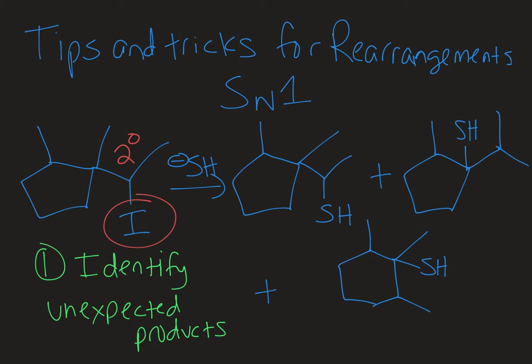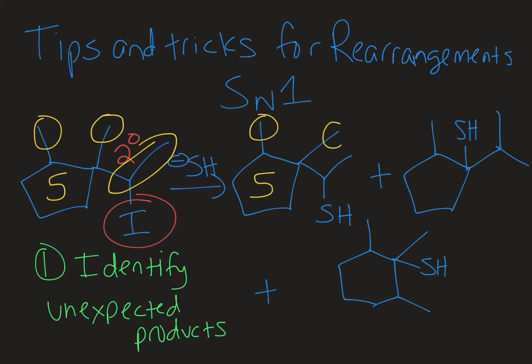If we look at the structure of our starting material, we have a five-membered ring with a methyl group coming off the top carbon, and then on the next-door neighbor carbon there's another methyl group and an ethyl group. Looking at the first product, it also has a five-membered ring with a methyl group off the top carbon and a methyl and ethyl group off the adjacent carbon, with the nucleophile in the exact same position where the leaving group was. So this would be an expected product.